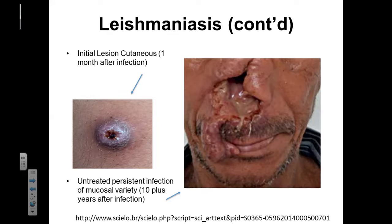Cutaneous leishmaniasis will result in small lesions. These small lesions can resolve themselves relatively quickly if left untreated. Mucocutaneous leishmaniasis will result in gross breakdown of the tissue. Here we can see a patient whose nose has been degraded and now extends down over their lips, and they have mucous membranes producing a stream of mucus dripping over their upper lip because they had untreated mucocutaneous leishmaniasis.